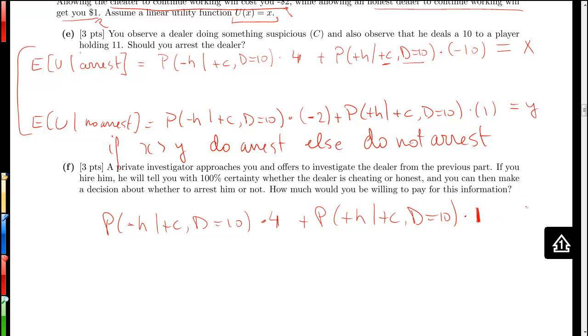So let's call this Z, and Z is the expected utility when given the honest or dishonest information from the investigator.